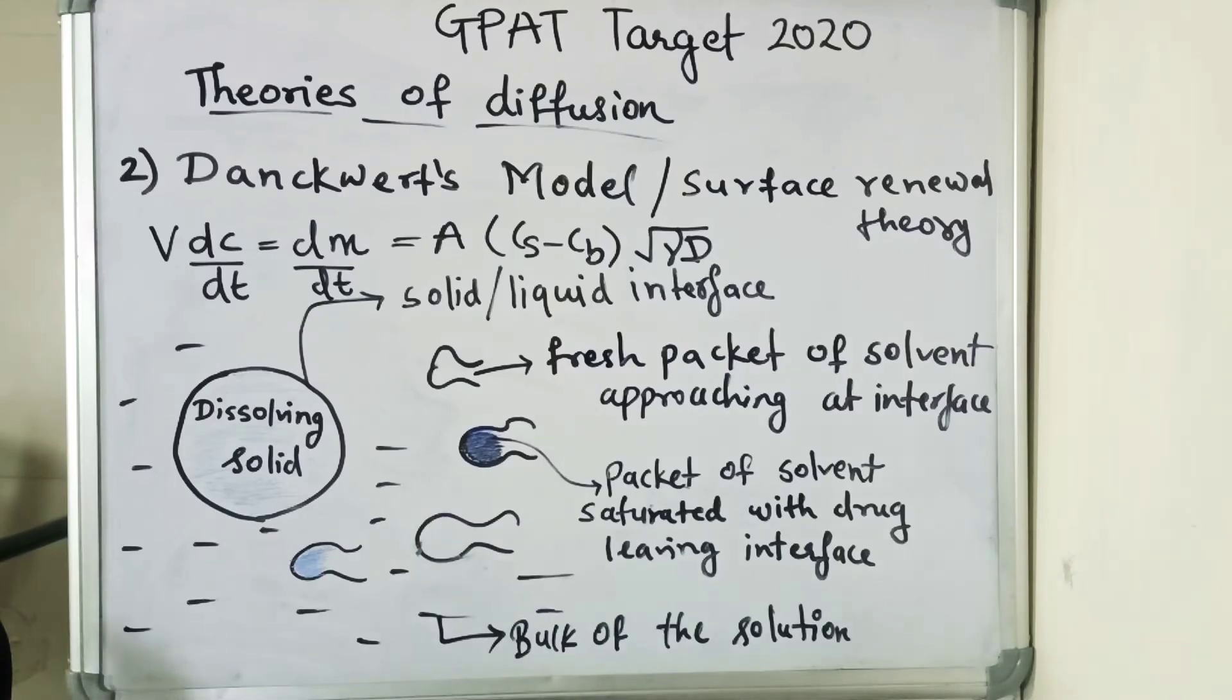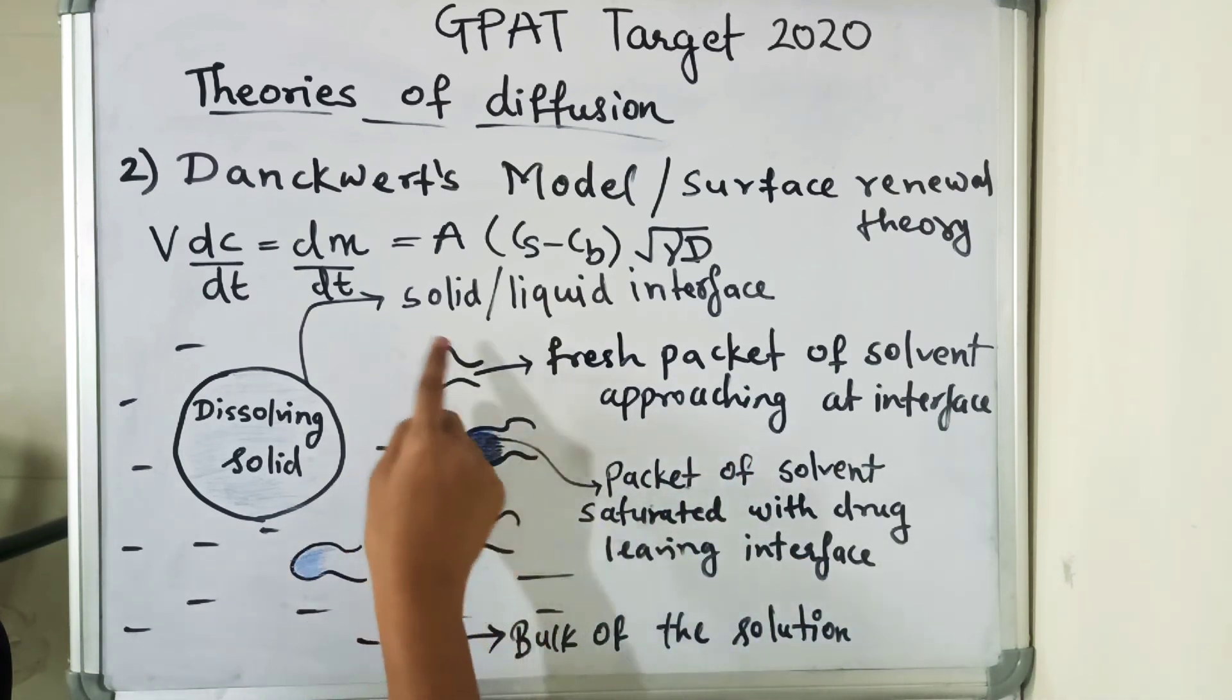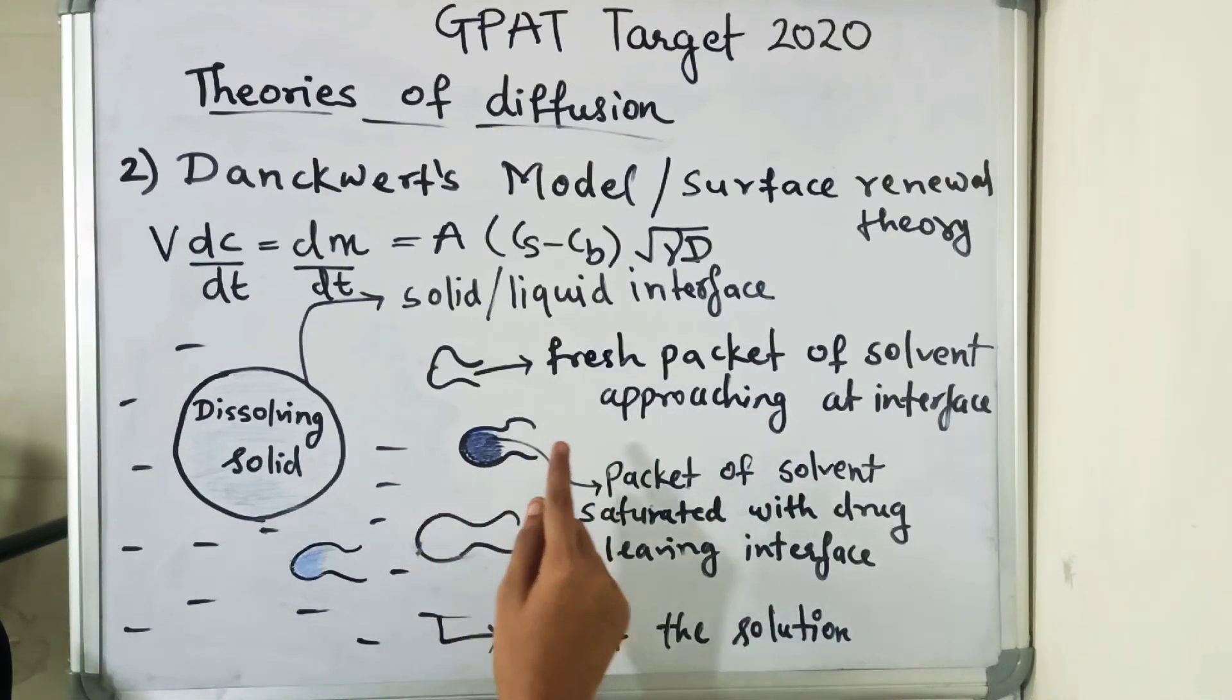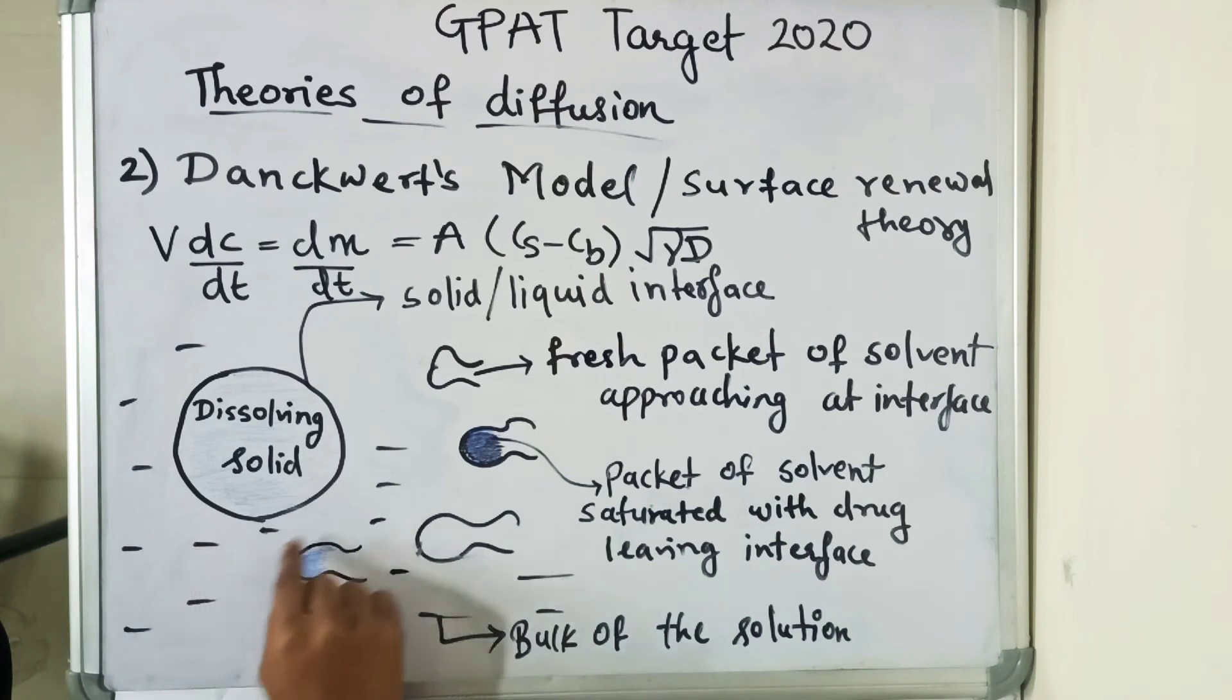Second is Danckwerdt's model theory or surface renewal theory. Danckwerdt told that there is turbulence in the dissolution media at the solid-liquid interface. Because of that, the agitated fluid consisting of macroscopic packets reach the solid-liquid interface in a random fashion due to eddy current, absorbs the solid by diffusion, and is carried to the bulk of the solution.